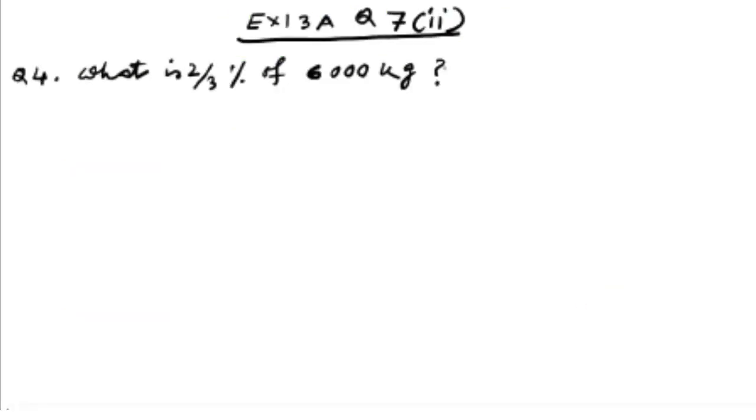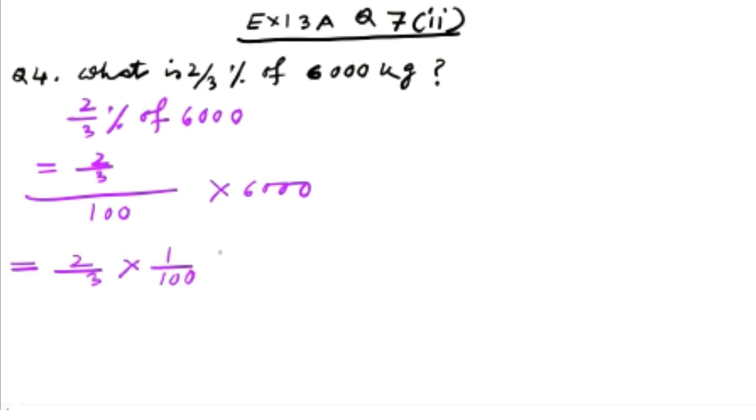Question number 4: What is 2 by 3 percent of 6000 kg? Now we know 2 by 3 percent means 2 by 3 divided by 100, and of means multiplication. Wherever you see this of, you multiply. So 2 by 3 percent of 6000 is equal to 2 by 3 divided by 100 into 6000. So this is equal to 2 by 3 into 1 by 100, as 100 ka denominator 1 hai, so we have to write 1 by 100, into 6000.